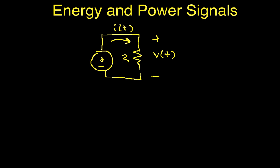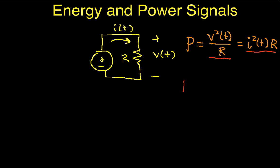We're interested in the power associated with the resistor — in other words, the power that's dissipated by the resistor as the current I flows through it. From circuit analysis, power is V squared over R, or equivalently I squared times R. The rate at which energy is dissipated by the resistor is given by either expression. In both cases, power is proportional to V squared, and power is proportional — with a different proportionality constant — to I squared.